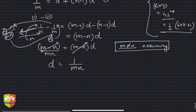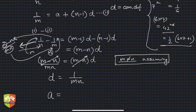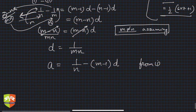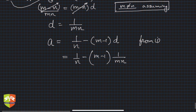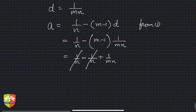Now let's find a. From equation 1: a = 1/n − (m − 1)d = 1/n − (m − 1) × 1/mn = 1/n − 1/n + 1/mn. So a = 1/mn. Both a and d equal 1/mn.